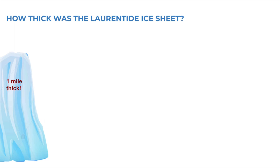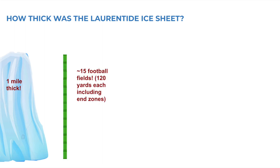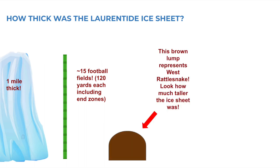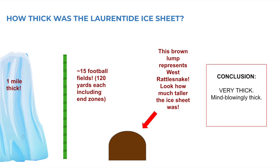To put that in perspective, I've put my minimal graphic design skills to the test to make this handy graphic for you. A glacier a mile thick is as tall as 15 football fields — it's also as tall as 176 school buses, but that would have taken way too long to draw. This brown lump represents West Rattlesnake. Look at that — it is completely dwarfed by the giant ice sheet that covered this spot thousands of years ago. The conclusion? Pure awe. This thing was massive.